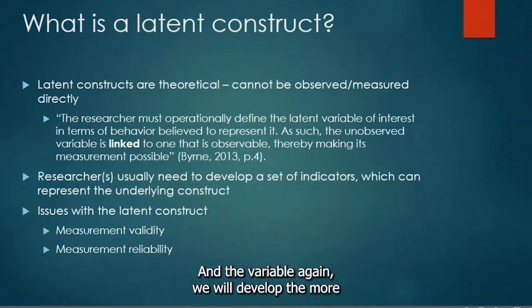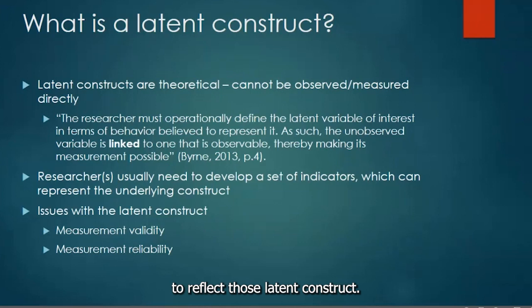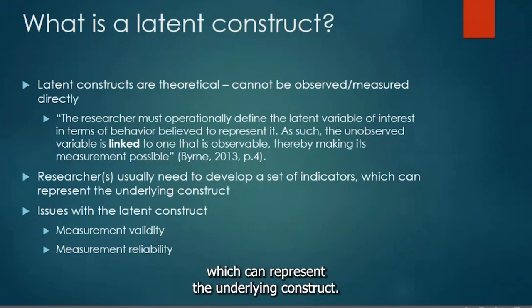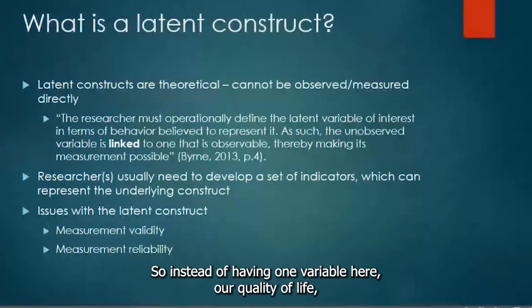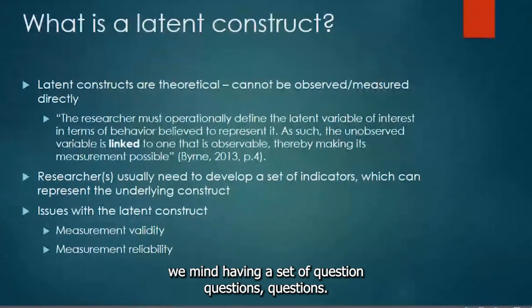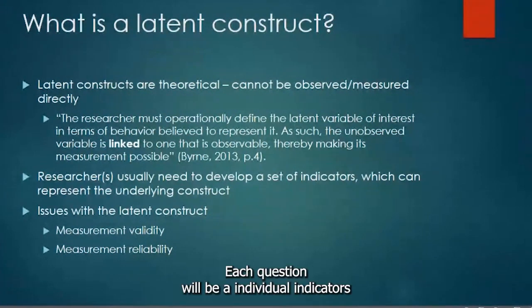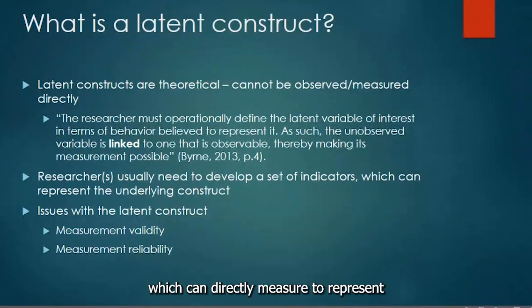In order to measure those latent variables, we will develop more directly measurable indicators to reflect them. Researchers usually need to develop a set of indicators which can represent the underlying construct. So instead of having one variable — quality of life — we might have a set of questions, where each question is an individual indicator that can be directly measured to represent the latent construct.